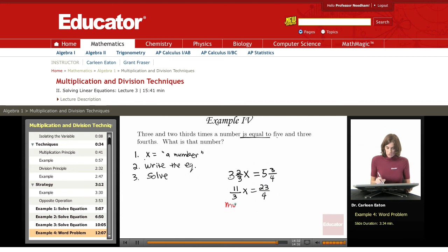I'm going to multiply by the inverse, or the reciprocal, which is three-elevenths. So if I have three-elevenths times eleven-thirds x equals twenty-three-fourths, I also need to multiply the right side by three-elevenths.